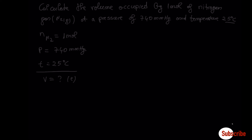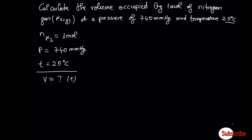Let's move to the first example dealing with the ideal gas law. Calculate the volume occupied by one mole of nitrogen gas at a pressure of 740 mmHg and a temperature of 25°C. Immediately you should recall the ideal gas law: PV = nRT. From here you have pressure, number of moles, R the gas constant, and temperature.